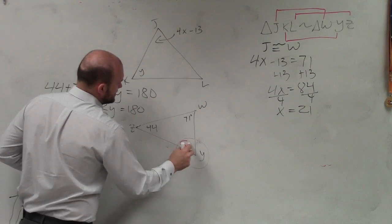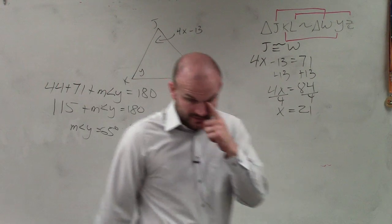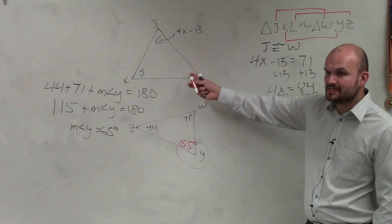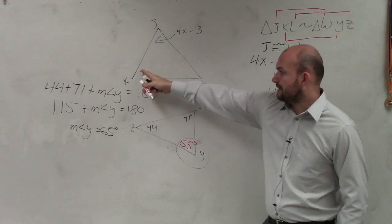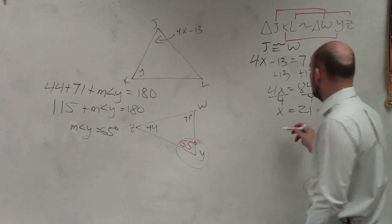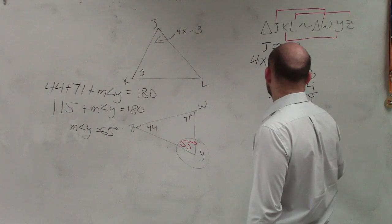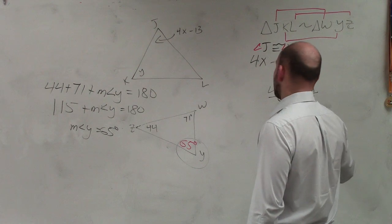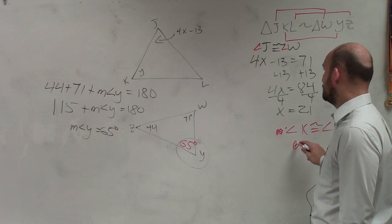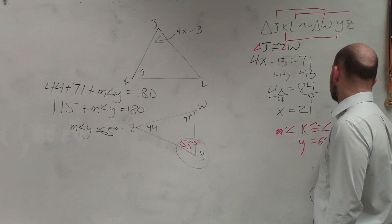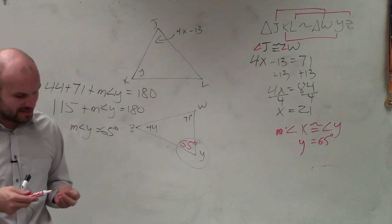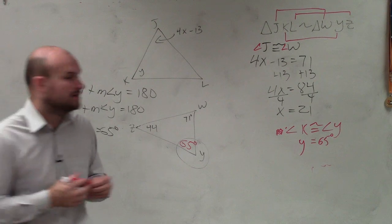Couldn't you just do like 180 minus? Yes, absolutely. That would probably be the quicker way too. So if that's 65, then that has to be 65, right? Because that is congruent to that. So if that's 65 degrees, that has to be 65 degrees. So we can say that angle K is congruent to angle Y. That's Y is equal to 65 degrees. And I know the Y's might confuse you a little bit because one is an angle Y and one is a variable Y. But you should have 65 degrees for Y and 21 for x.